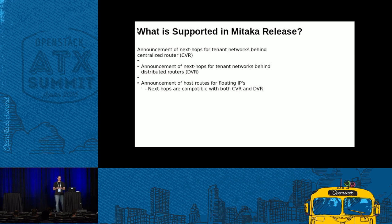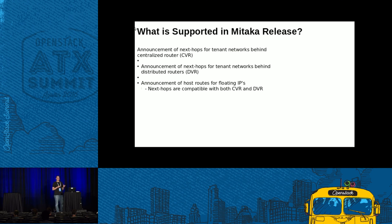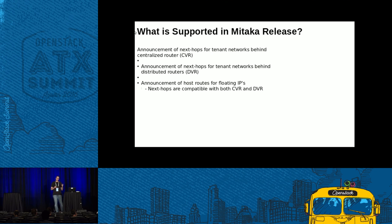So what did we get into Mitaka? Right now we have the ability for Neutron to announce next hops for tenant networks behind a centralized router, for tenant networks behind a distributed router (DVR), and we can also announce host routes for floating IPs. This announcement is compatible with both centralized routers and distributed routers. I'll talk about how that all works and show some examples illustrating it in action.